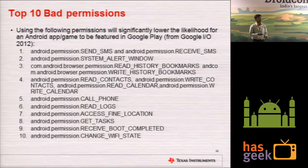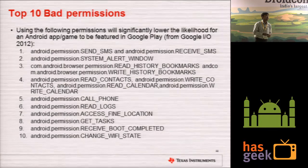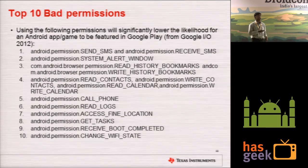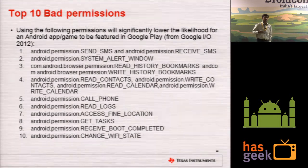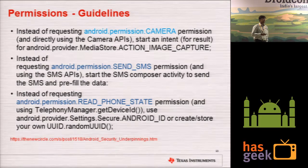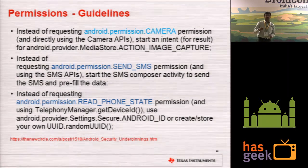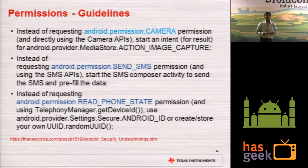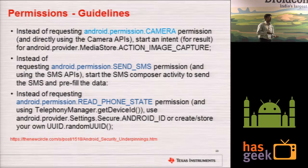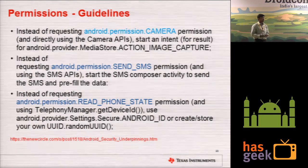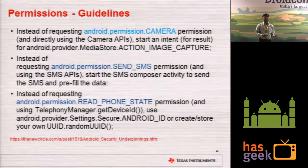These are the ten bad permissions described in Google I/O. If your application has all these permissions, it is likely to be rejected on Google Play. So if your application is unnecessarily asking for these permissions, there is a good chance Google Play will reject it. For example, instead of using the SEND_SMS permission, you can use the SMS composer. Instead of accessing the camera directly, you can use the image capture intent. Instead of reading phone state, you can request a random ID if that's all you need.